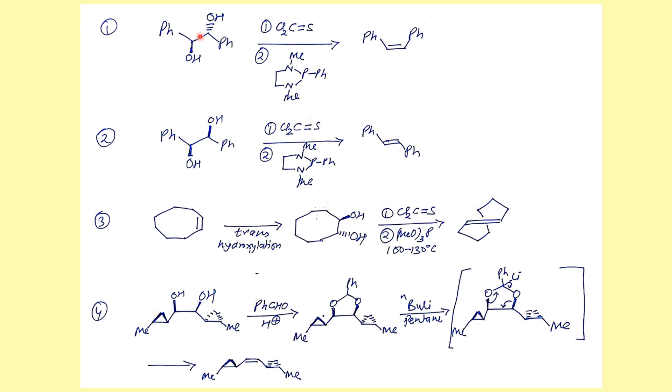As we can see in this example, when we start from these particular diols, we prepare the thio carbonate ester followed by treatment with the phosphine reagent. What we end up getting is the formation of the olefin.